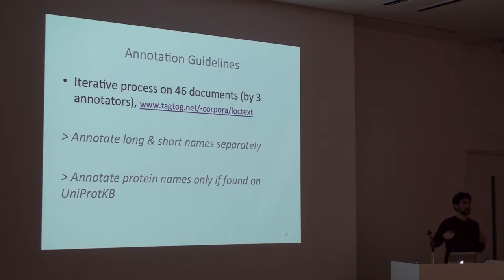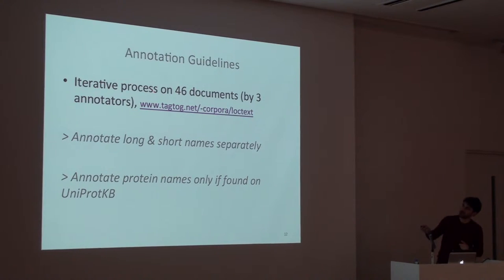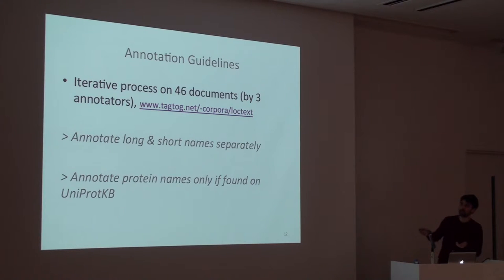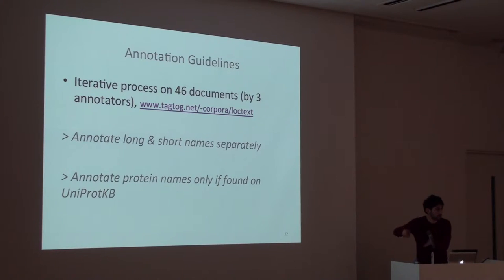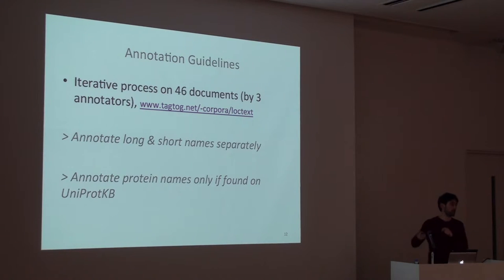As for the annotation guidelines, we started with one bioinformatician, then me — more or less a computer scientist bioinformatician — and then another guy who was a computer scientist. We had an iterative process of annotating 46 documents and reviewing the annotation guidelines each time — what to annotate, what not, and so on. For example, we had simple cases like annotating long and short names, but we really wrote that down so it was completely clear. One defining rule of our corpus was to annotate protein names only if we can find them in UniProt, which also removes ambiguity.